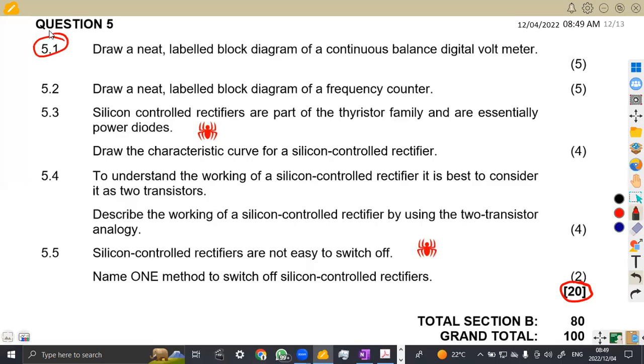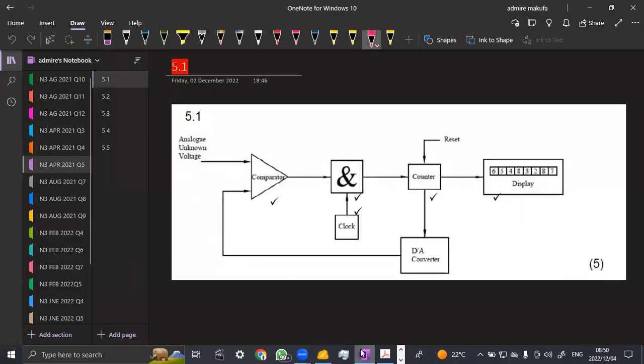Question 5.1, we are asked to draw a neat labeled block diagram. This is a block diagram of a continuous balanced digital volt meter. So we are showing a digital volt meter in terms of a block diagram. That's what we had here on 5.1, a block diagram. We are given the analog, which is the input voltage, the comparator.